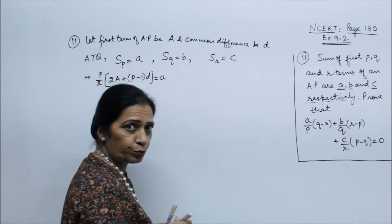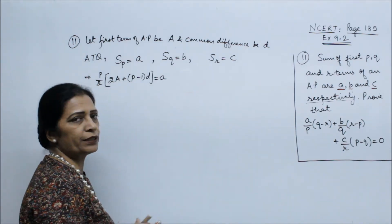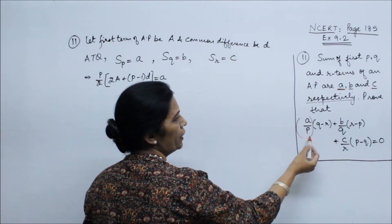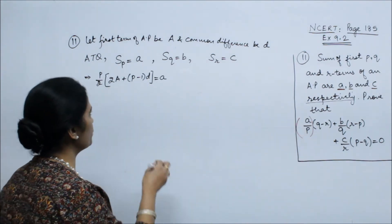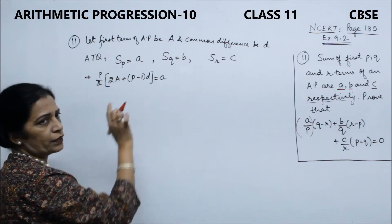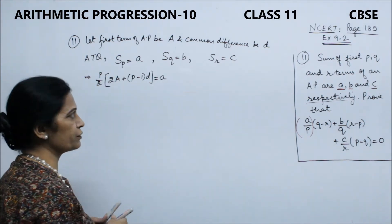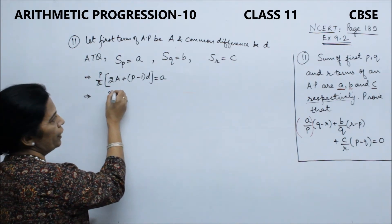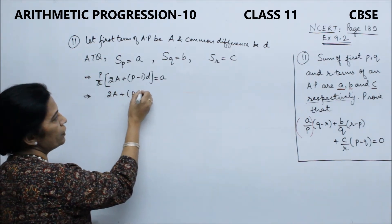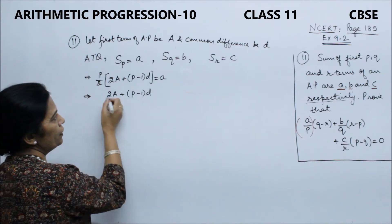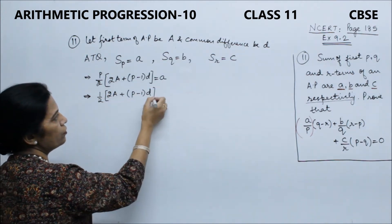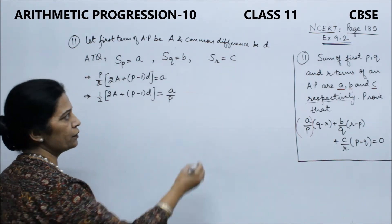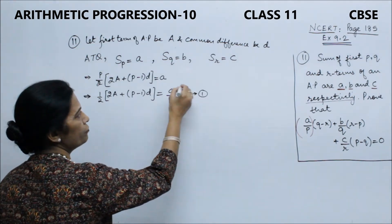Now the expression we have to prove has the form A/P, so we shift P to the denominator. This gives us: 2A + (P−1)·D = 2A/P. This is our first equation.